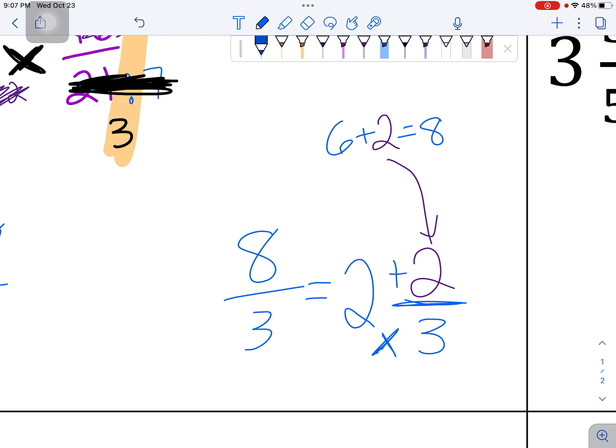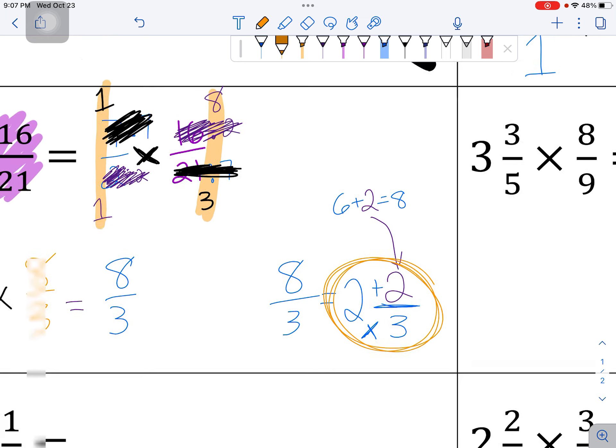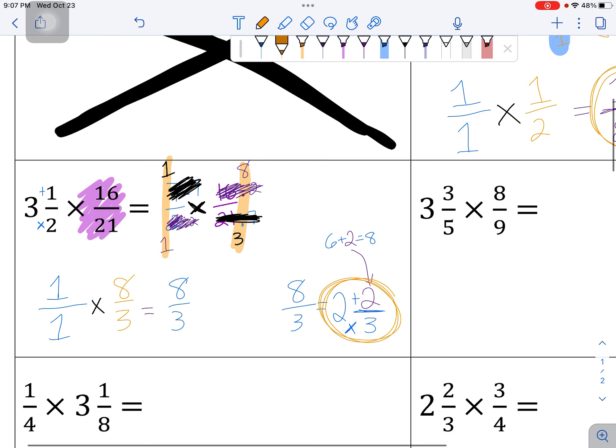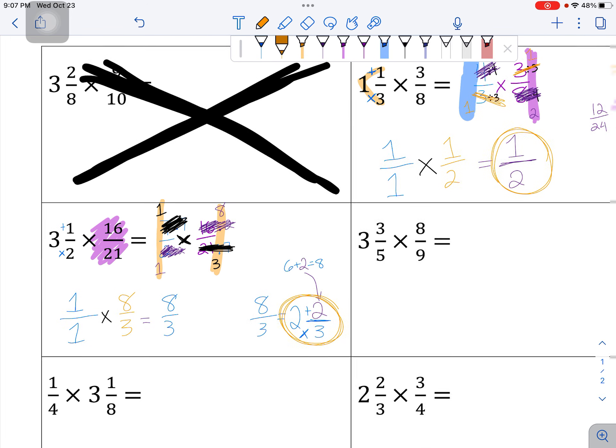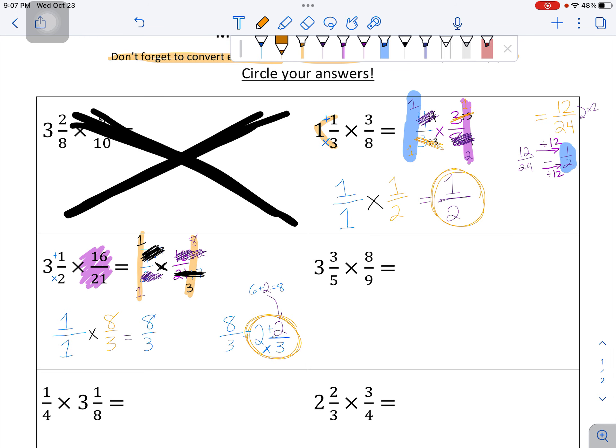3 times 2 is 6. 6 plus 2 is 8. When you get your final answer, circle. I'm giving you lots of days to practice this. It's going to take some time. Once you get the patterns and the hang of it, it gets a little easier. But it's going to take some time. Give yourself some time to figure this out.